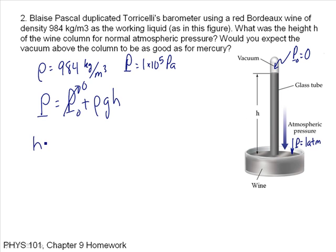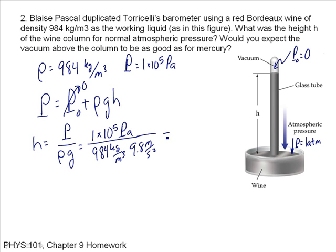So I want to solve for h. h is equal to p divided by rho times g. That's 1 times 10 to the fifth pascals over the density, which is 984 times g. And that gives me the answer, which is 10 meters. So the height of this column is 10 meters at 1 atmosphere. Just in comparison, the height of a mercury column is 760 millimeters. 760 millimeters of mercury, that is, at 1 atmosphere.